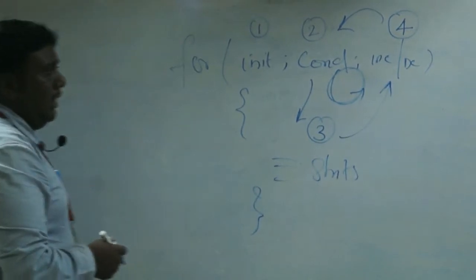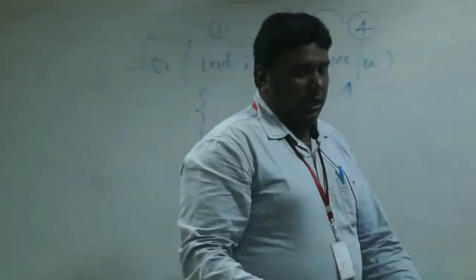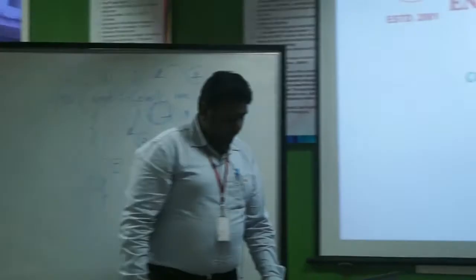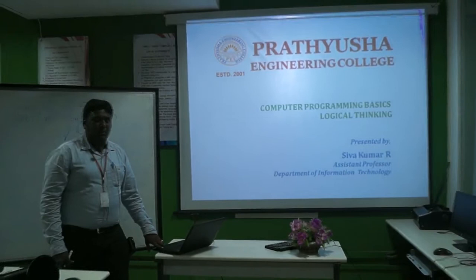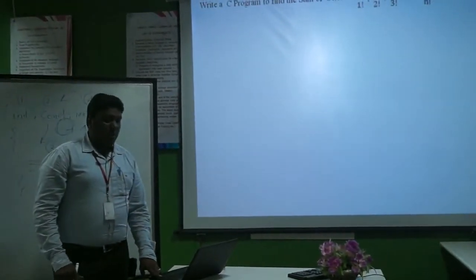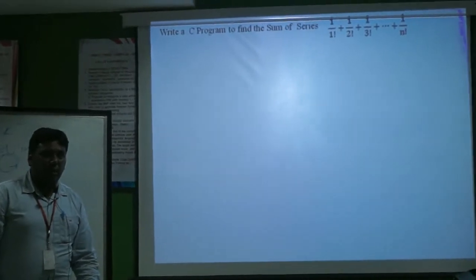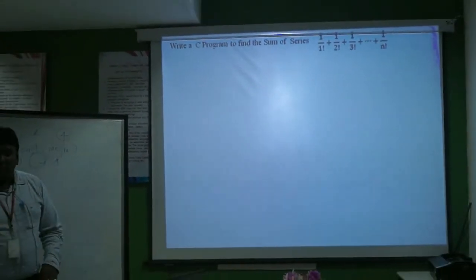Let us see some examples about C for loops. Let us go with a simple example to derive a simple sum of series expression. Let us go with an expression: 1 by 1 factorial plus 1 by 2 factorial plus 1 by 3 factorial up to 1 by n factorial.